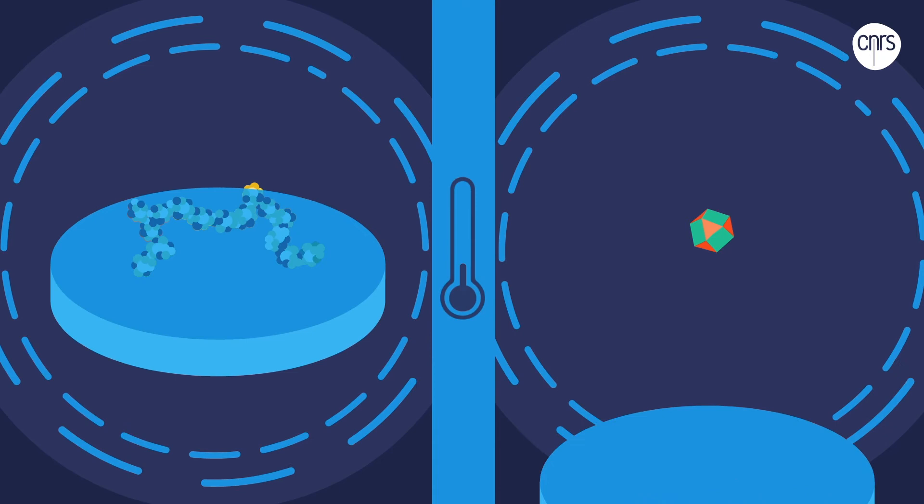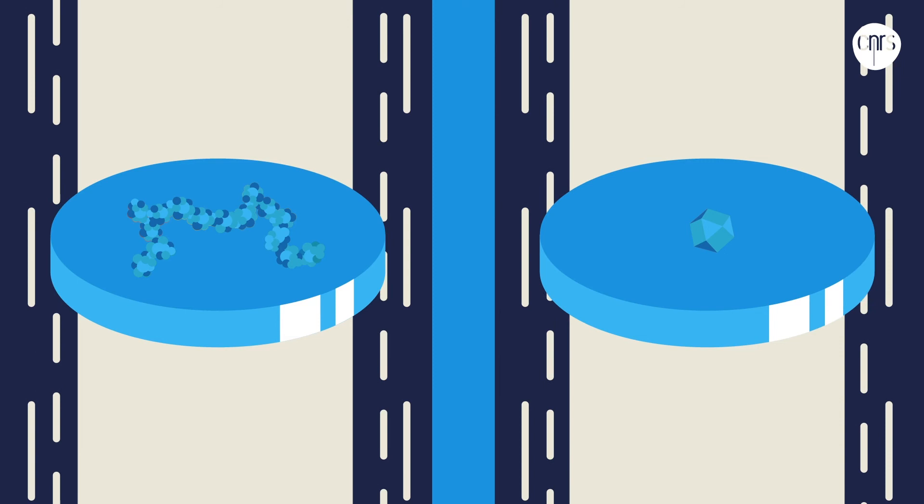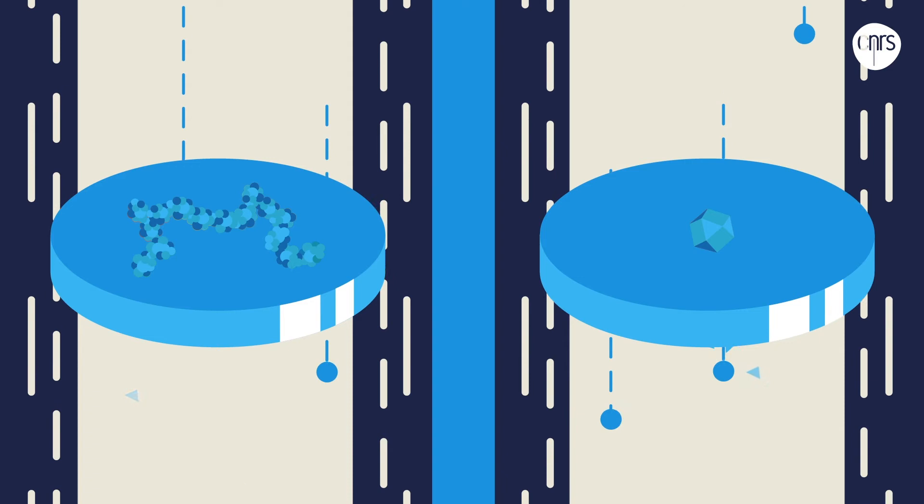Cryogenics. By placing the sample in liquid nitrogen at minus 196 degrees Celsius, the water it contains changes into something similar to glass, vitrified water. In this special state, the sample deteriorates much slower.